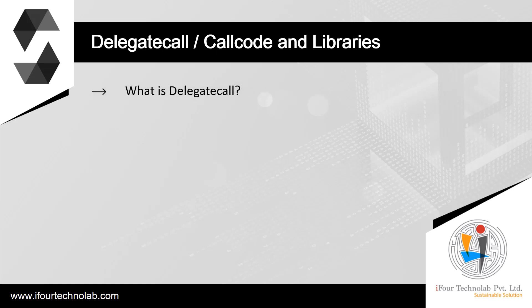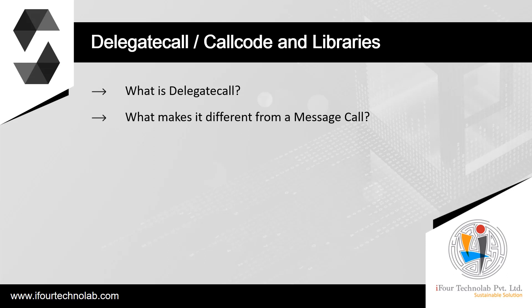What is delegate call? Delegate call basically says that a contract is allowing — delegating — another contract to do whatever it wants to its storage. This is a special variant of a message call, identical to a message call apart from the fact that the code at the target address is executed in the context of the calling contract, and msg.sender and msg.value do not change their values. This means that a contract can dynamically load code from a different address at runtime. Storage, current address, and balance still refer to the calling contract; only the code is taken from the called address.